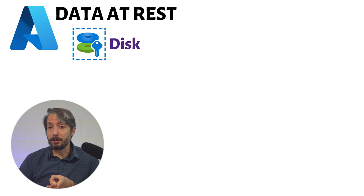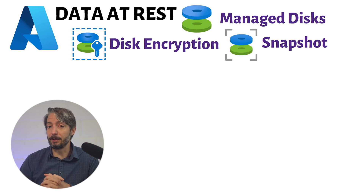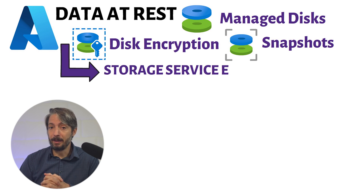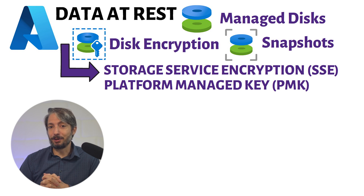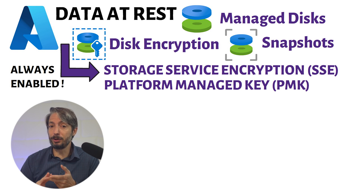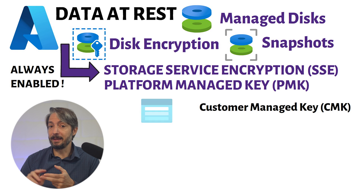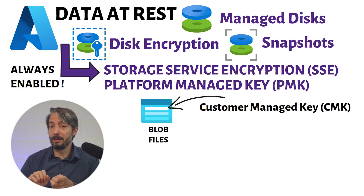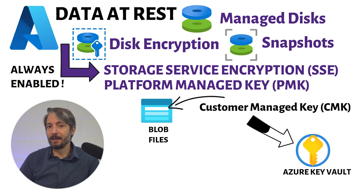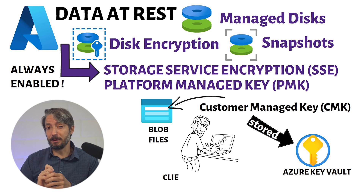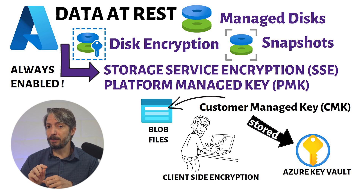Let's now look at some of the most common Azure services and how encryption is used. Data at rest immediately points us to disk encryption. All managed disks, snapshots, and images are encrypted using storage service encryption, SSE, with a PMK — a platform managed key. In technical terms, it can be compared a little bit to BitLocker on Windows. This encryption is enabled on all storage accounts regardless of tier or SKU. You can also specify a CMK, customer managed key, for encrypting data in blob and Azure Files storage accounts. These keys are then stored in the Azure Key Vault. And let's not forget about client-side encryption, which can be used as additional security before uploading files to the storage account.